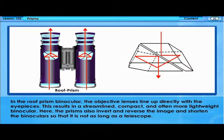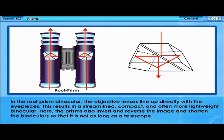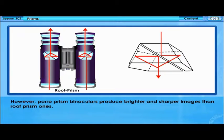In the roof prism binocular, the objective lenses line up directly with the eyepieces. This results in a streamlined, compact, and often more lightweight binocular. The prisms also invert and reverse the image and shorten the binoculars so that it is not as long as a telescope. However, porro prism binoculars produce brighter and sharper images than roof prism ones.